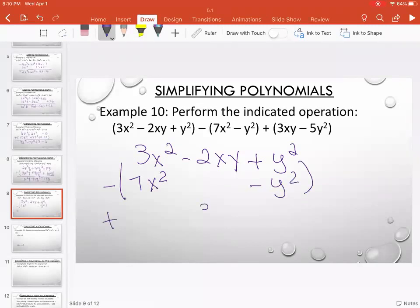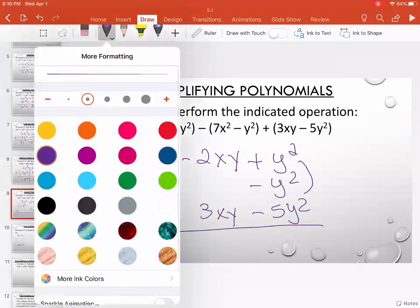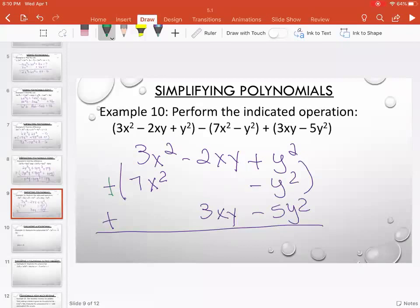here I have a 3xy minus 5y squared. Only one of those is a minus and that's the middle one. So I change the middle signs.